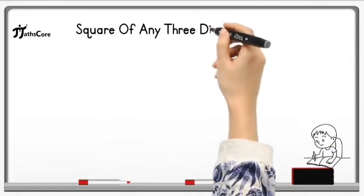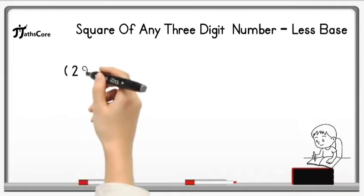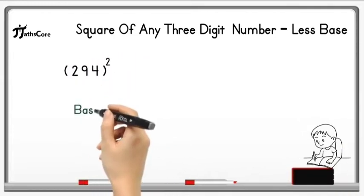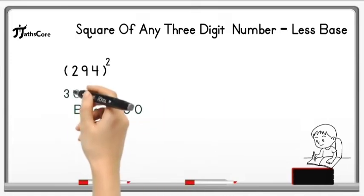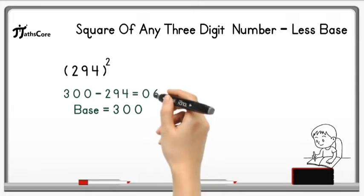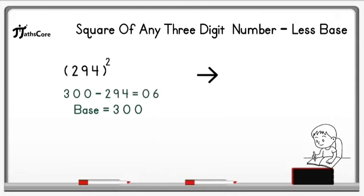Let's solve first example on square of any three-digit number with low base. Example is 294 square. For 294 base is 300. So first of all subtract 294 from 300. So 300 minus 294 is equal to 6.